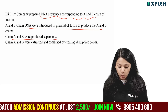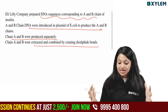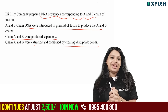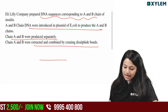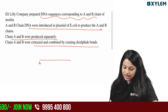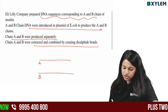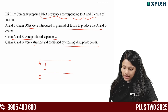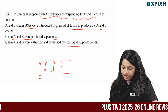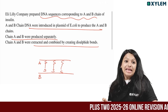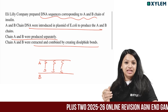Chains A and B were extracted and combined by creating a disulfide bond. We have a disulfide bond joining the chains — a joint chain. This is how we produce company insulin.